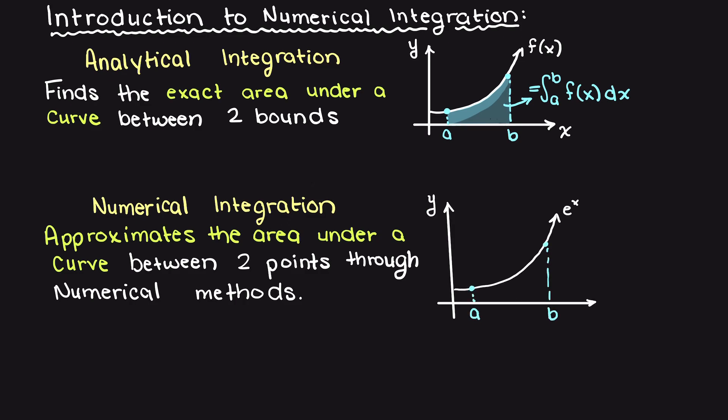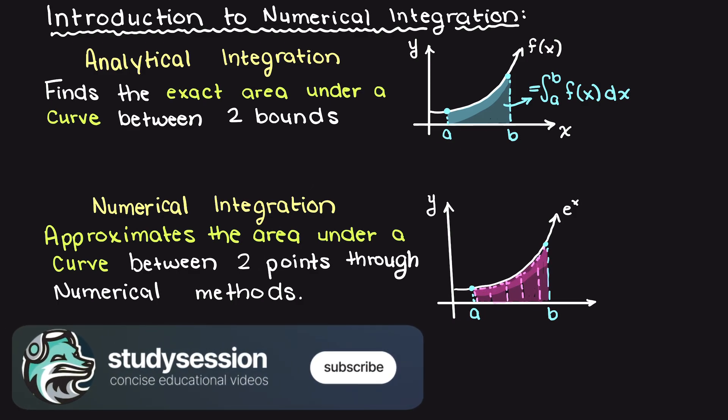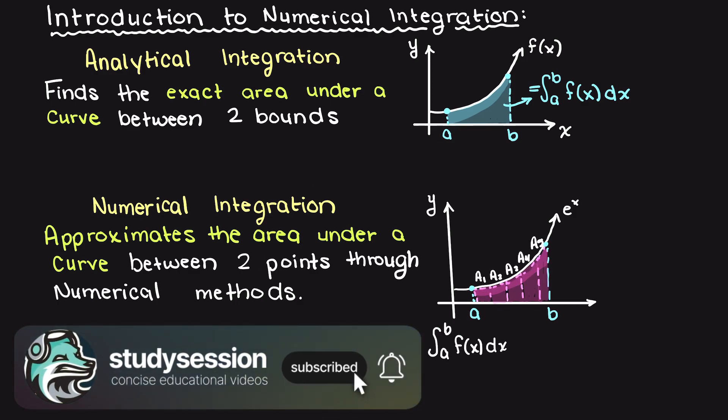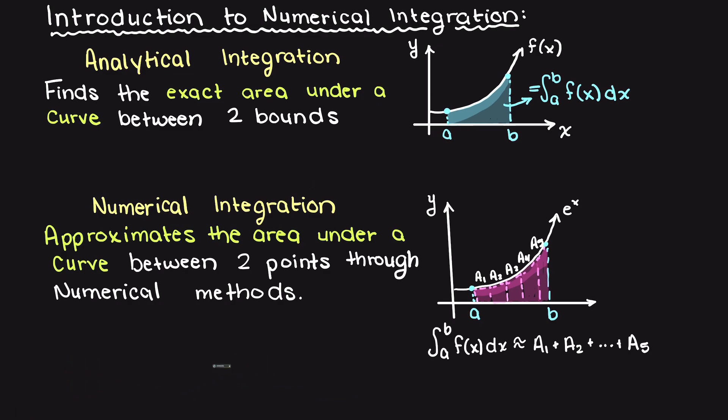If we were to imagine the function e to the x, it would look something like this. Then we would divide it up into let's say 5 subintervals, and use the numerical integration techniques that we'll learn about in the coming videos to approximate the area of each of these blocks.